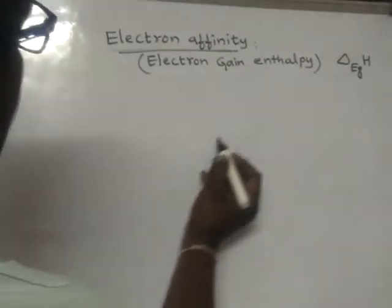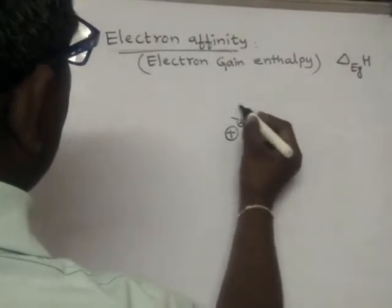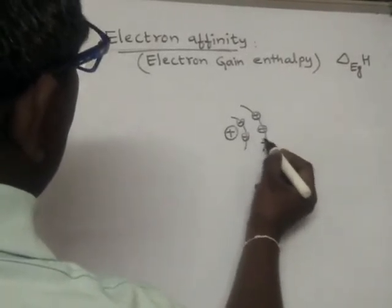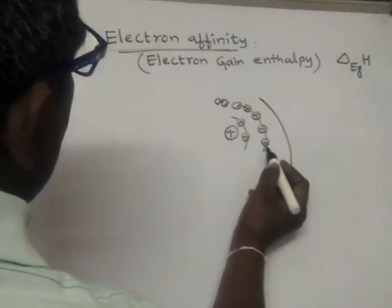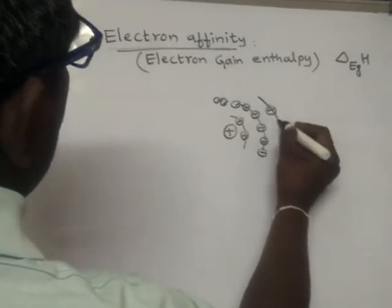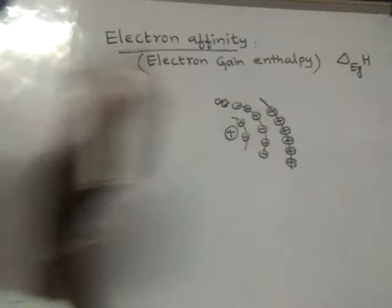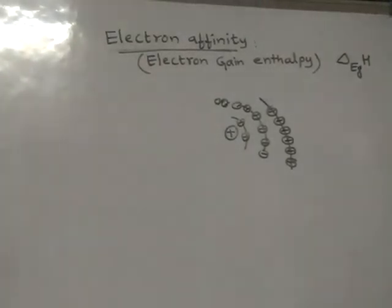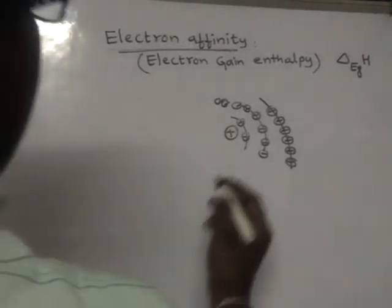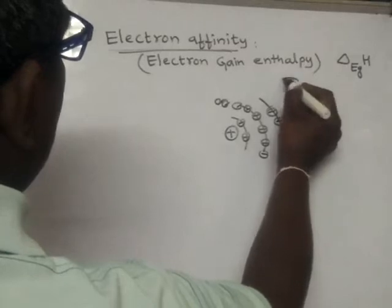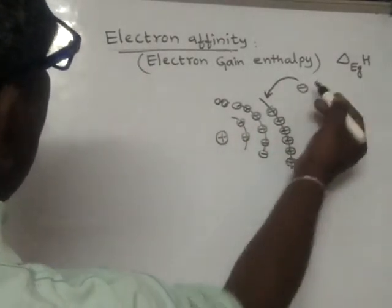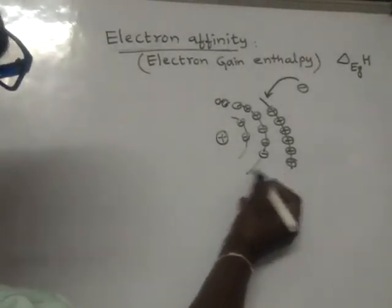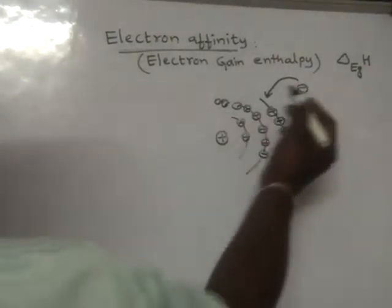Suppose there is an atom — this is the nucleus of an atom and these are the electrons present in the atom. Now I want to introduce an electron from the outside into the atom. So what happens when an electron is introduced from outside into an atom?